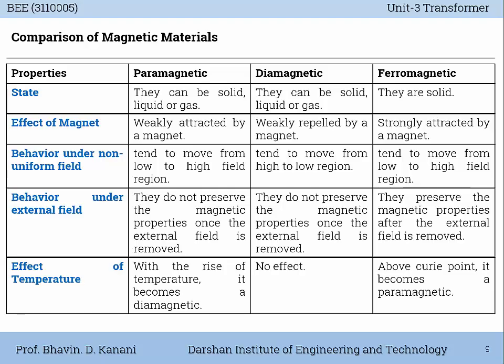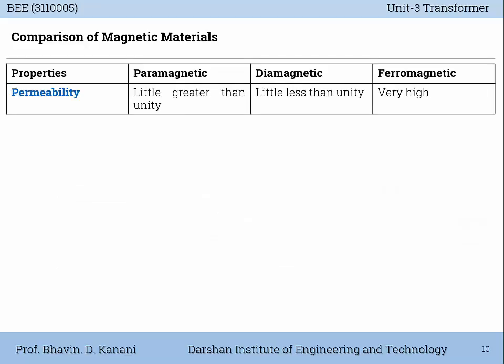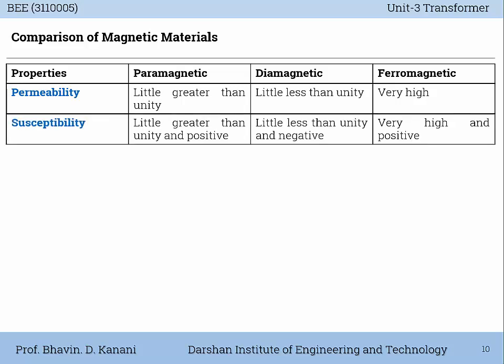Effect of temperature: With the rise of temperature, paramagnetic material becomes diamagnetic. On diamagnetic materials, there is no effect of temperature. On ferromagnetic materials, above the Curie point, it becomes paramagnetic. Based on permeability: In paramagnetic material, permeability is little greater than unity. In diamagnetic material, permeability is little less than unity. In ferromagnetic material, permeability is very high.